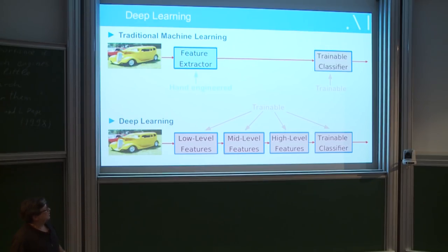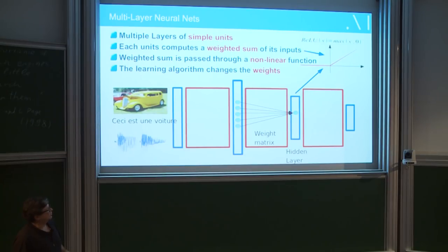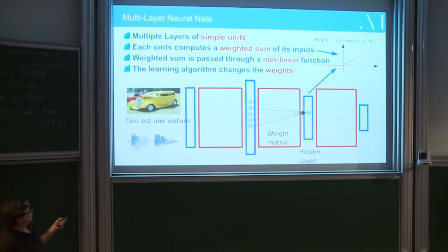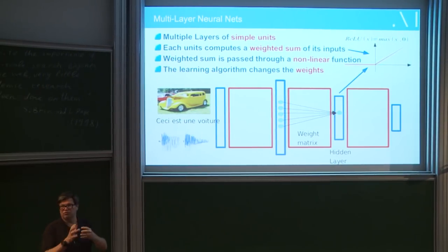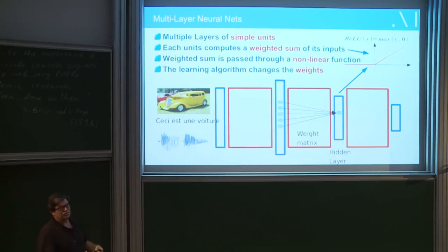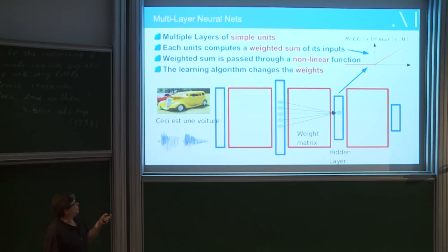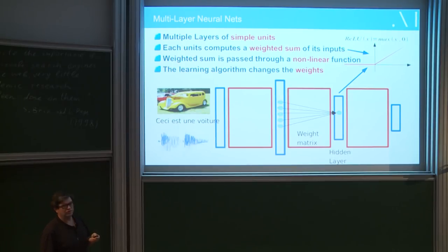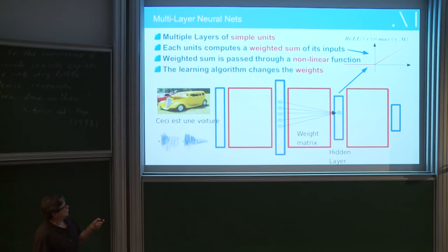The next question is: what do you put in those boxes? There is a surprisingly simple way of representing a rich family of parameterized functions, which consists in representing any signal through a vector or some sort of multidimensional array — engineers use the word tensors, but it's a multidimensional array. Then you apply a linear operator, a matrix. If the input is a vector, you get another vector, perhaps a different size. Then you take each component and pass it through a non-linear pointwise function.